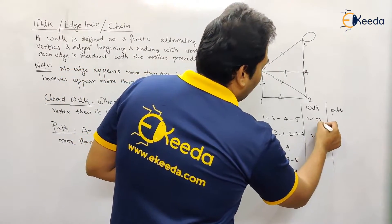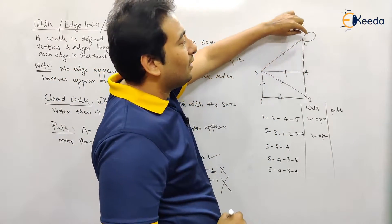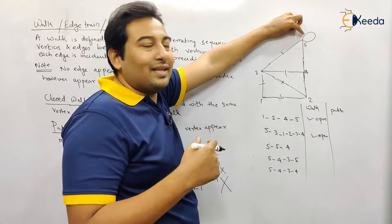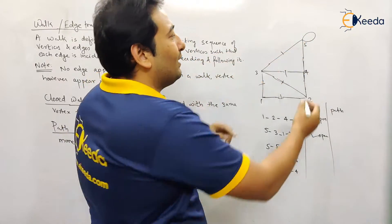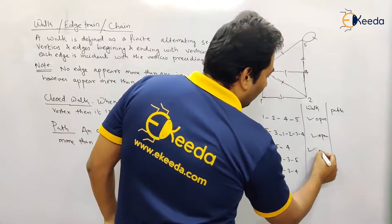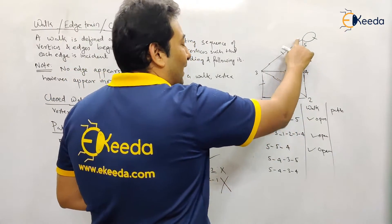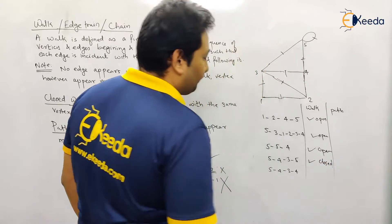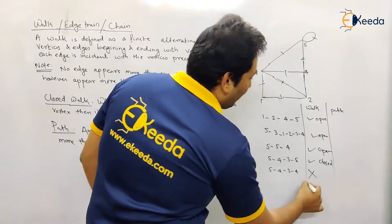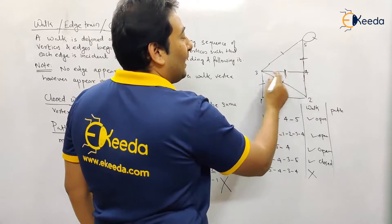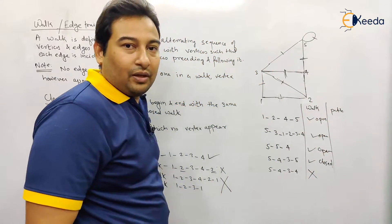Next, considering a loop: traversal 5-5-4, where edge 5-5 is the loop. Edge 5-5 is visited once and edge 5-4 is visited once, so it's a walk — an open walk. Next, traversal 5-4-3-5: this is a closed walk. Now traversal 5-4-3-4: is this a walk? No, it is not — edge 3-4 is visited more than once, so it is not a walk.